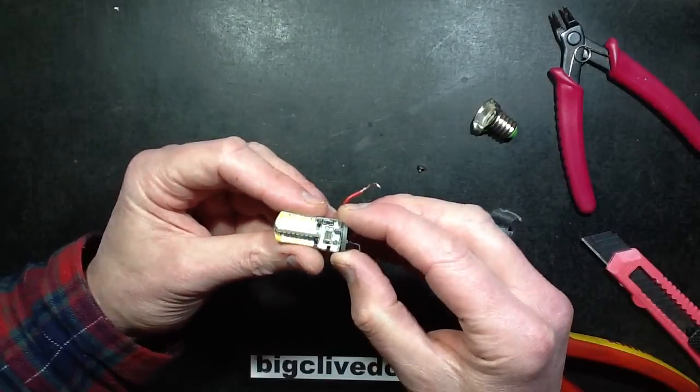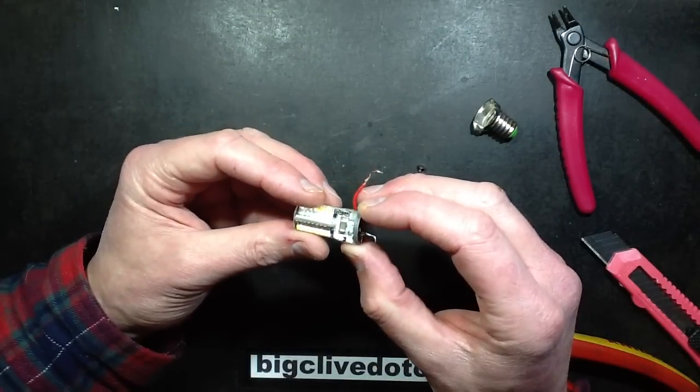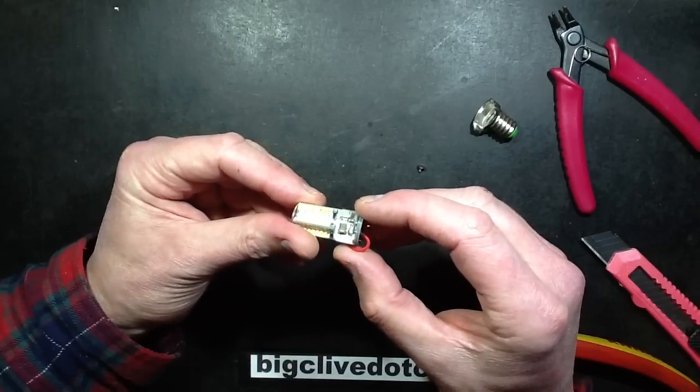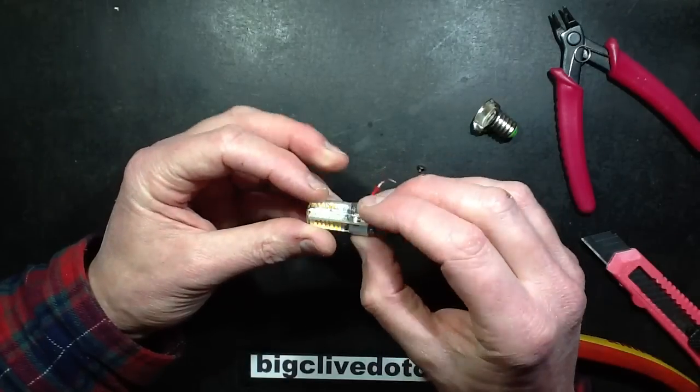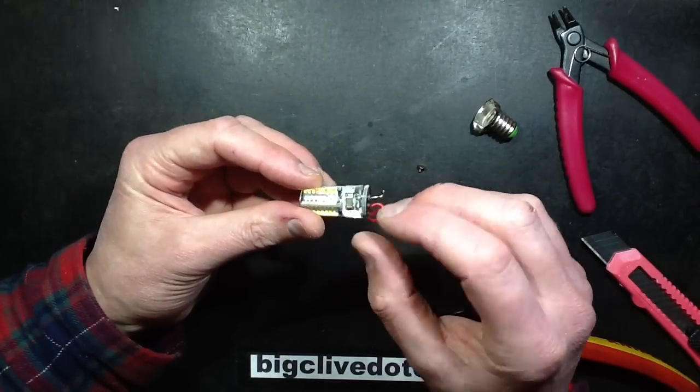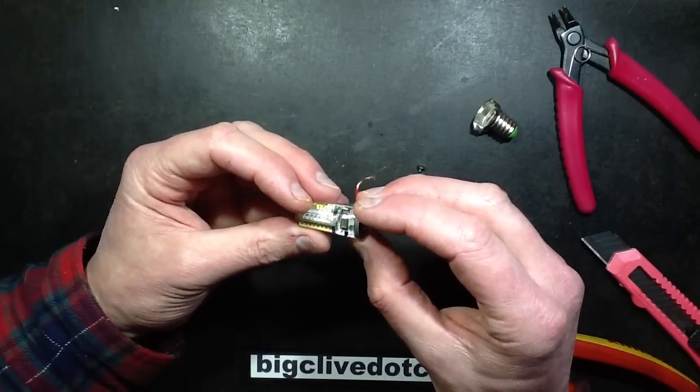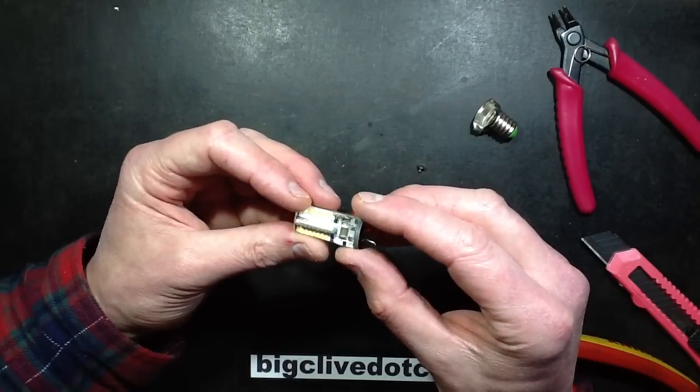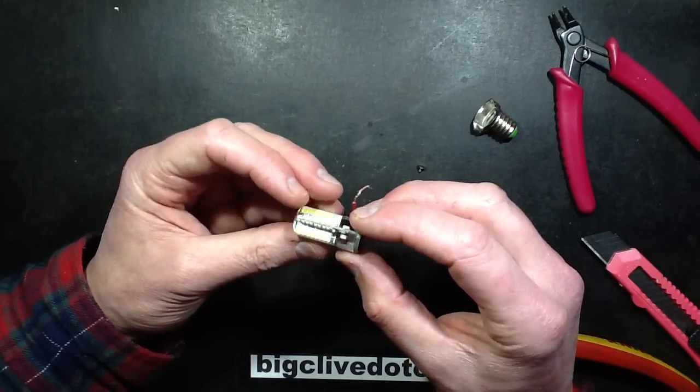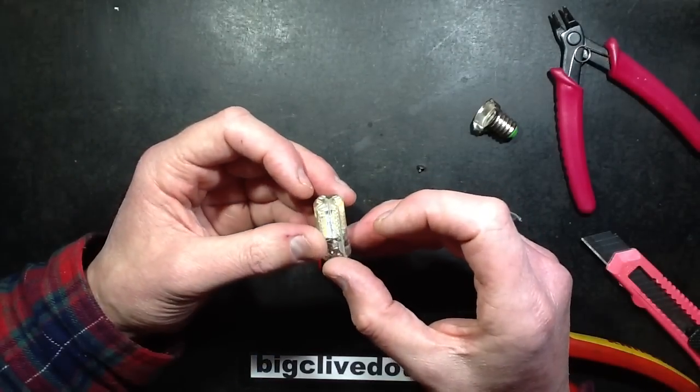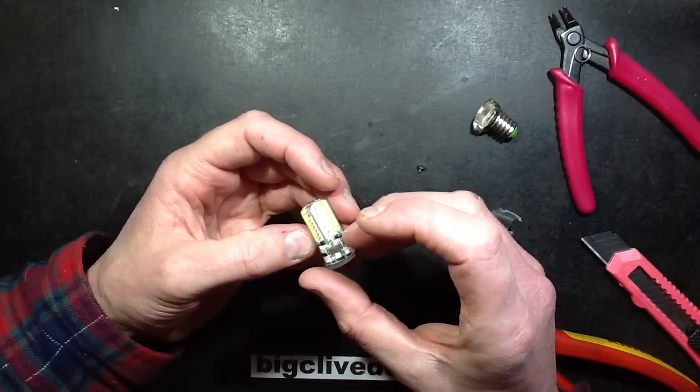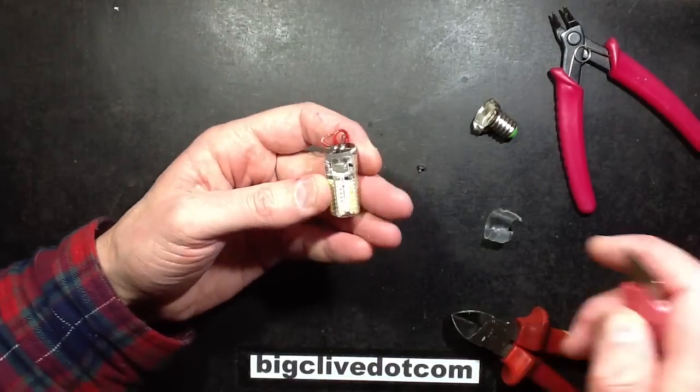I can see four diodes which are probably forming a bridge rectifier. There's two on either side. There's a capacitor on either side. I'm guessing that's two in parallel. And then there's really just a resistor. It's very minimalist. Let's cut it open.